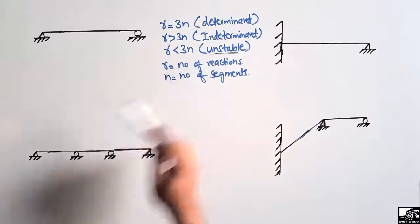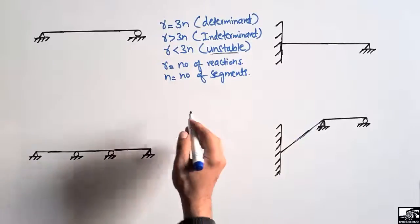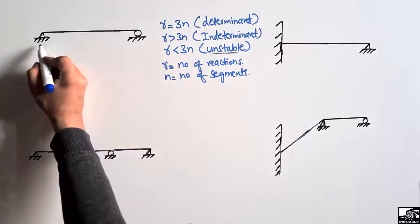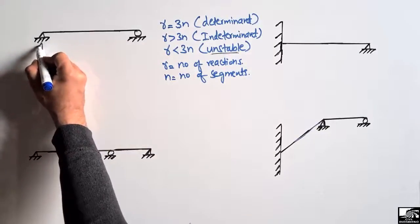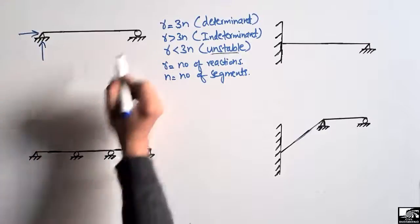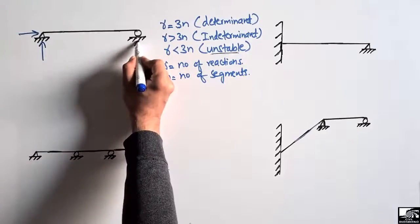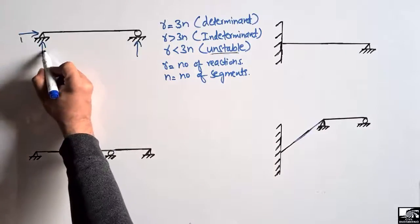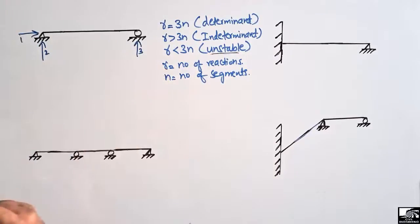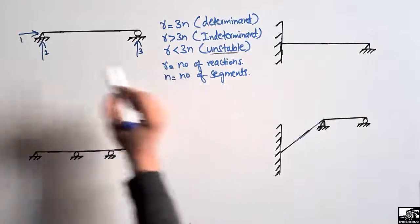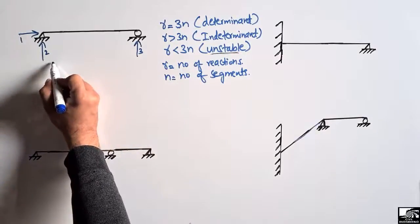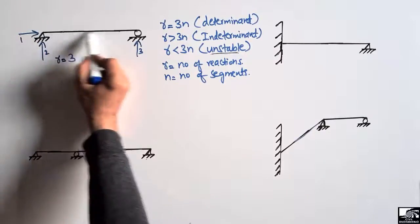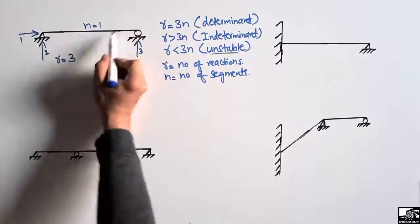Now, to find the determinacy of beams — this first beam is a simply supported beam. It has a hinge support, which can take vertical and horizontal loads, and a roller support, which can take only vertical load. So there are three reactions total, meaning R equals 3. This beam has only one segment, so n equals 1.